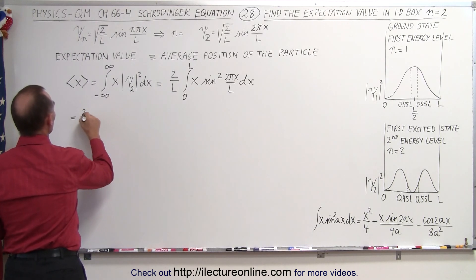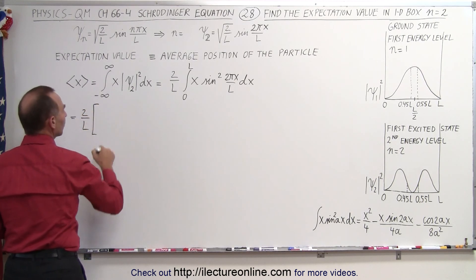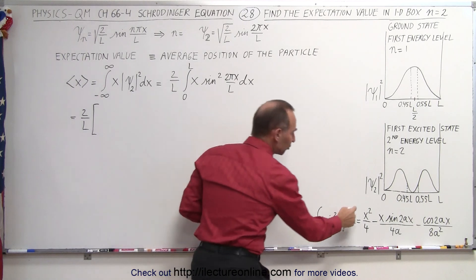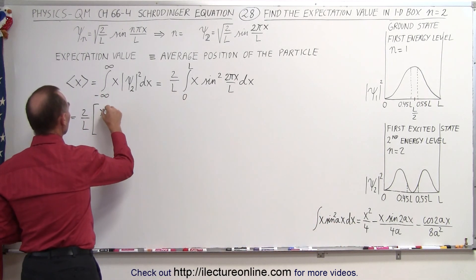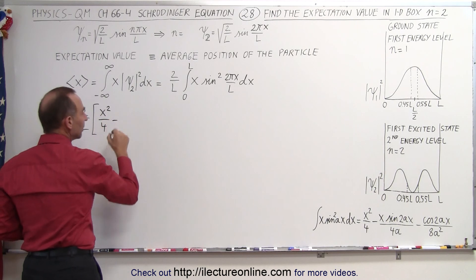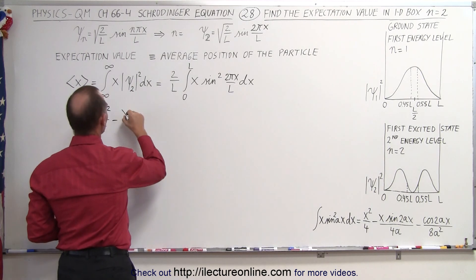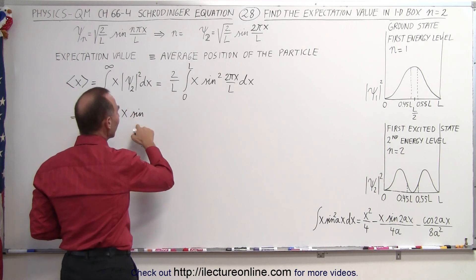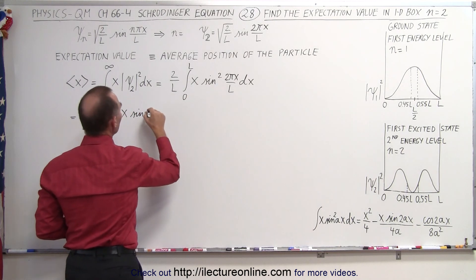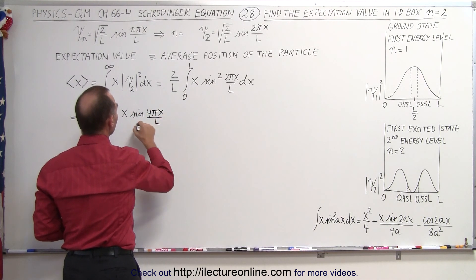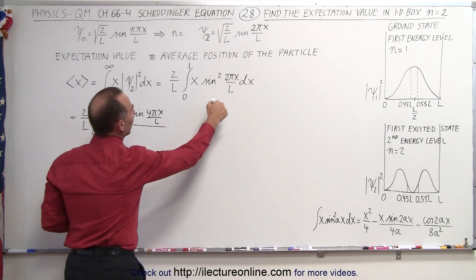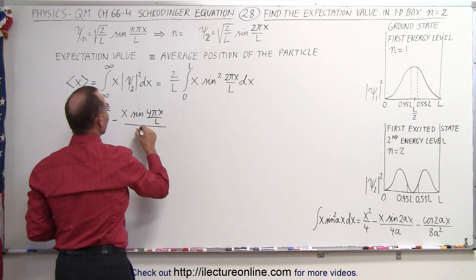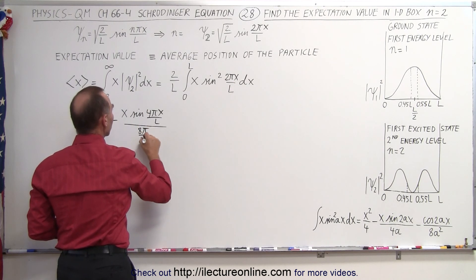So this becomes equal to 2 over l times, well, the first term will be x squared over 4—that's the same, that doesn't change. And then minus x times the sine of twice the angle. Twice this angle will be 4 pi x over l. The whole thing divided by 4 times a, and a being 2 pi over l, that would give us 8 pi over l.